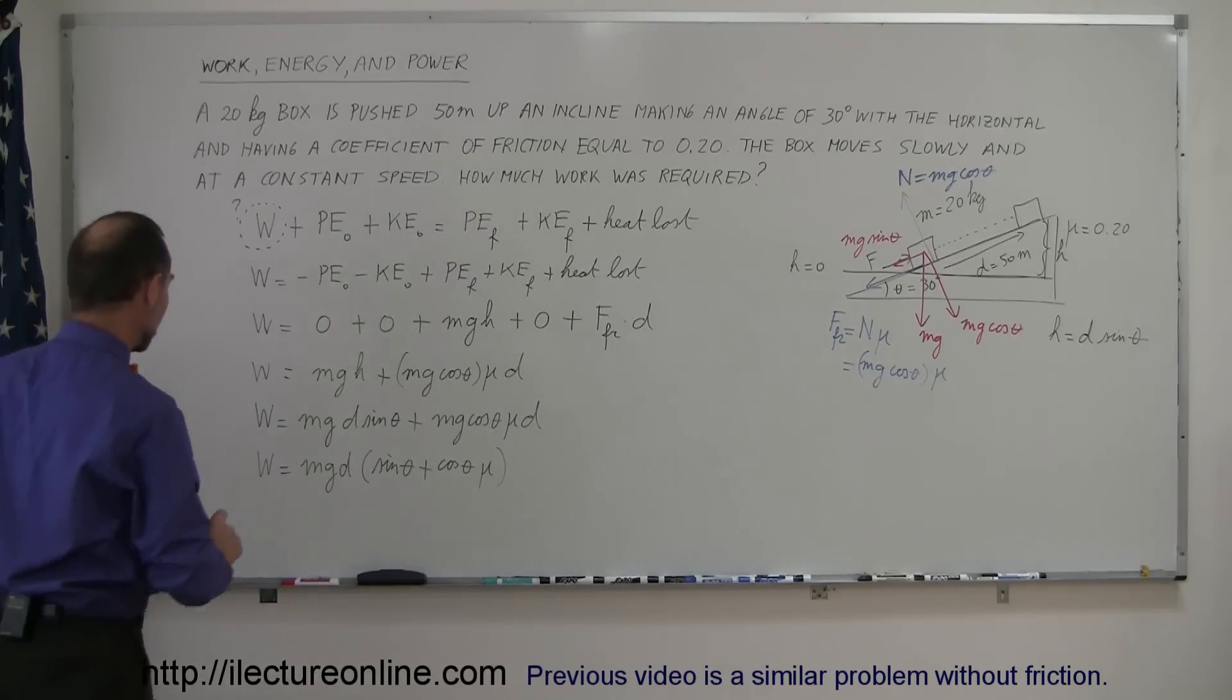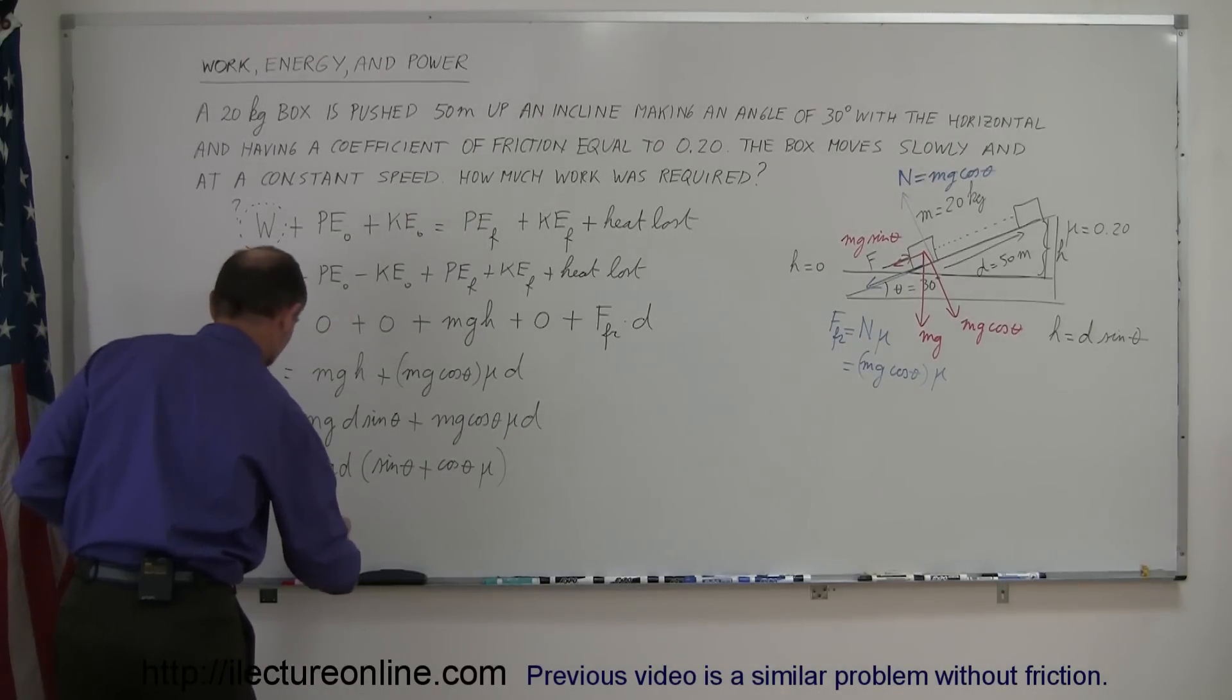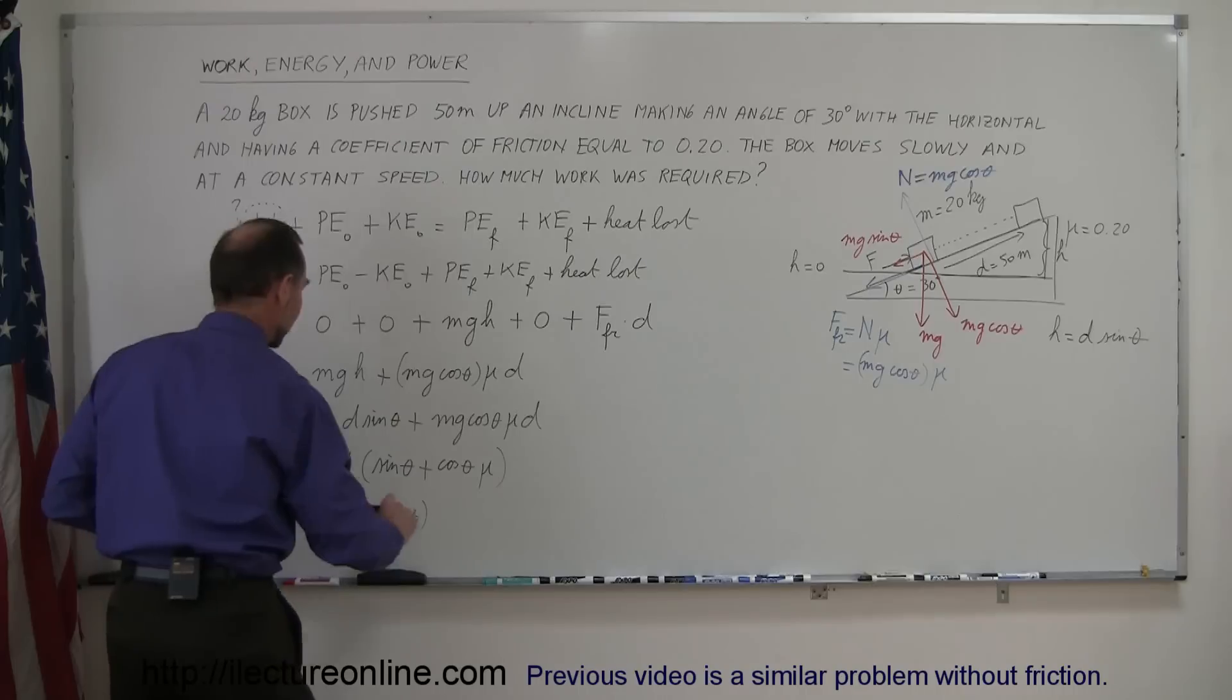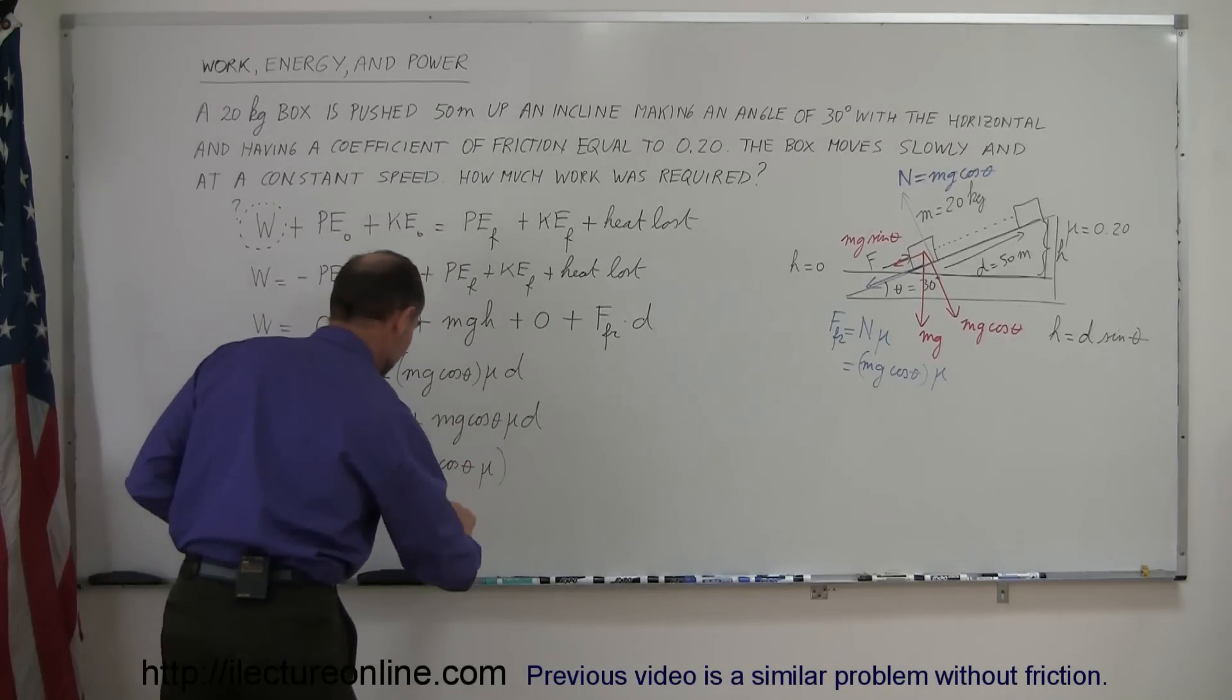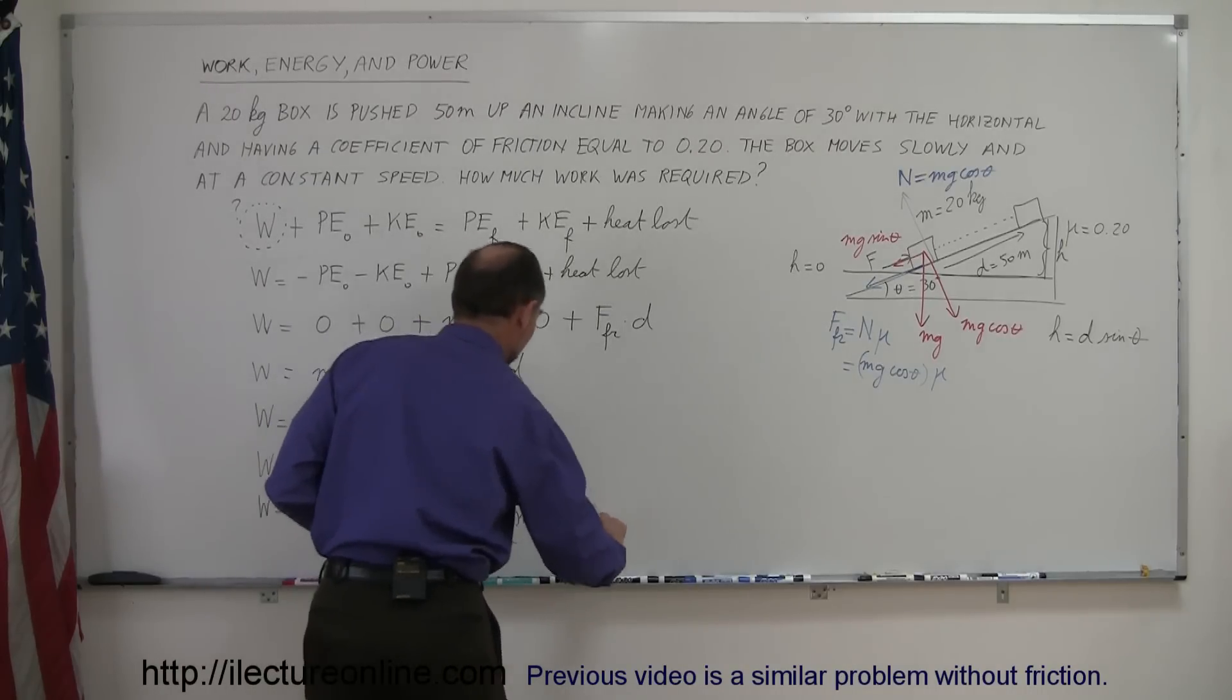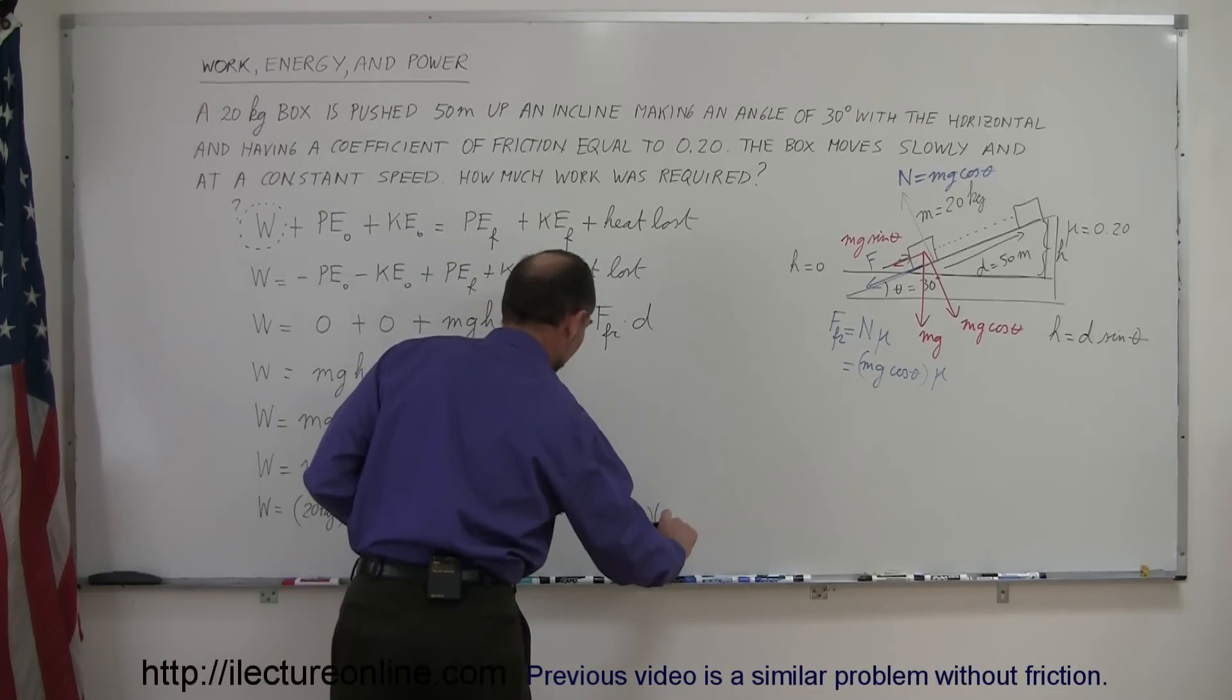And then plug in what these are equal to, the work done is equal to the mass, which is 20 kilograms, times g, which is 9.8 meters per second squared, times d, the displacement we said was 50 meters, and multiply the whole thing by the sine of 30 degrees, plus the cosine of 30 degrees, times mu, and mu is 0.2.